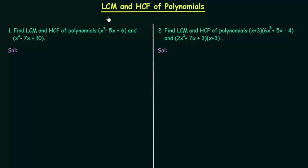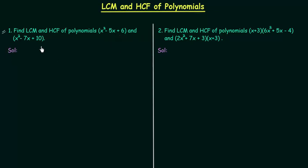In the last presentation we completed LCM and HCF of fractions. In this lecture we will find out LCM and HCF of polynomials. I have two problems and we will start with problem number one: find LCM and HCF of polynomials x² - 5x + 6 and x² - 7x + 10.